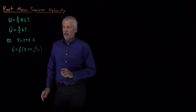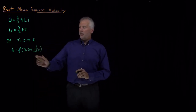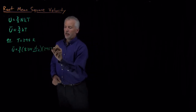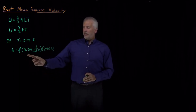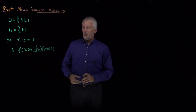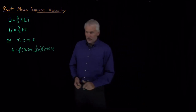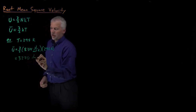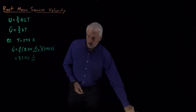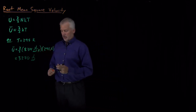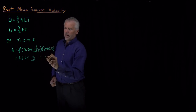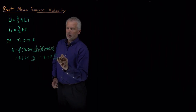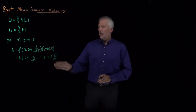I'll use Boltzmann's constant in the form of the gas constant: 8.314 joules per mole Kelvin, multiplied by the temperature, 298 Kelvin. So 3/2 times 298 times 8.314 — using a calculator, we find that the result is 3,270 joules per mole. Since we're in the thousands of joules per mole, we typically write that as 3.27 kilojoules per mole. That is the energy of a gas at 298 Kelvin.